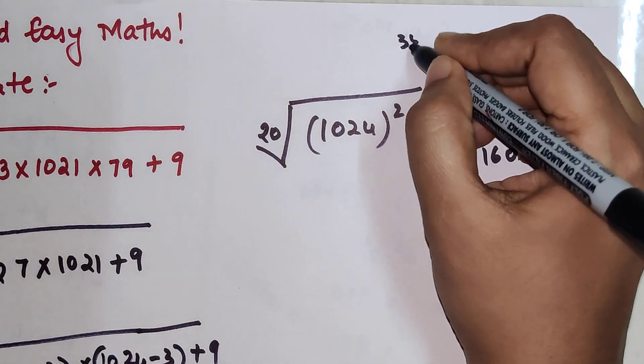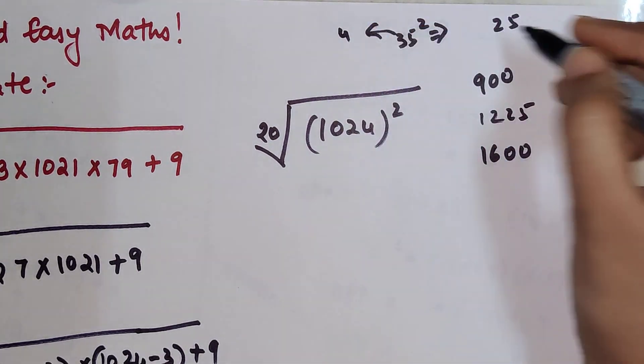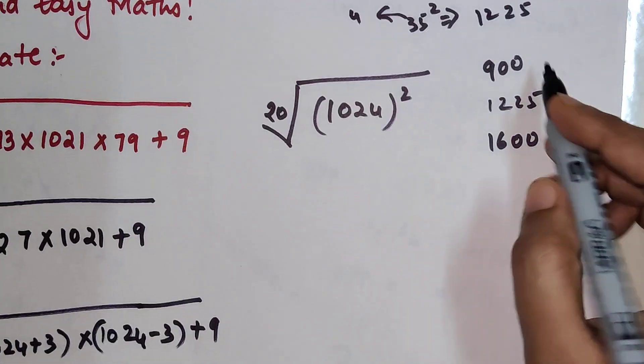35² is very simple. You just add 25 and then you multiply 3 with the next number which is 4. So 3 × 4 gets you 12. So this is your answer.